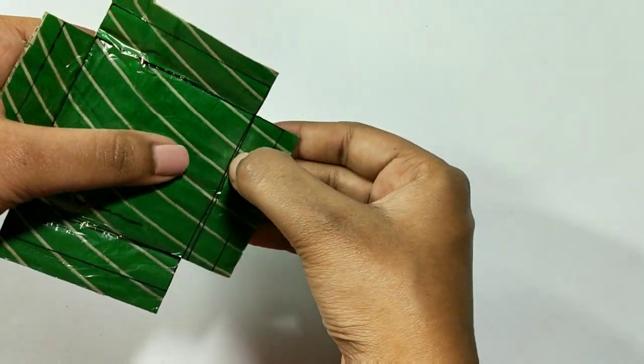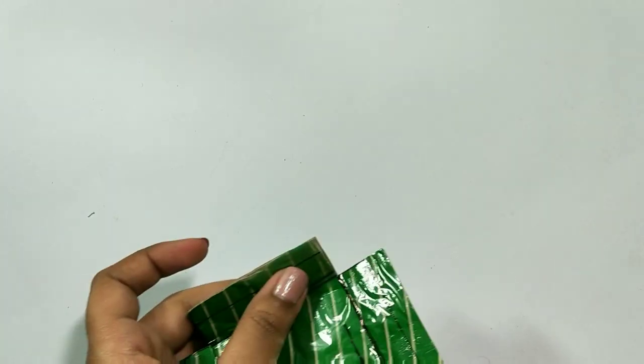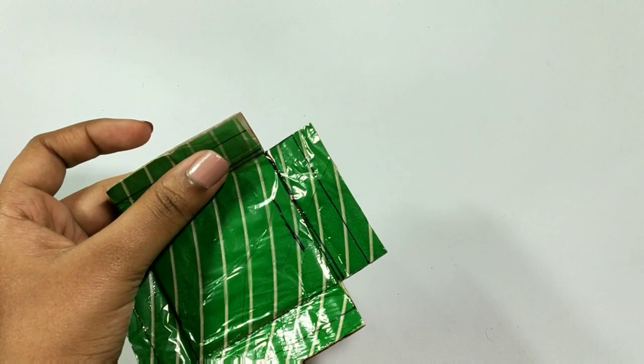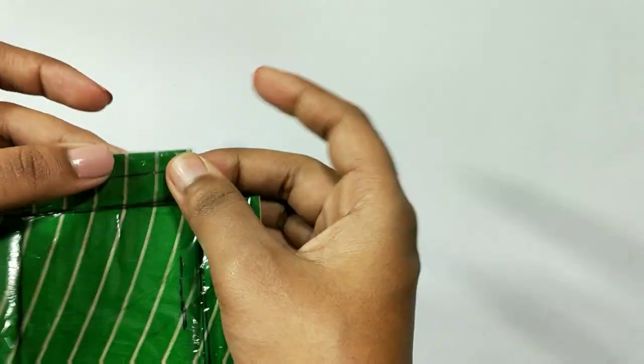Now, just fold it and make it a cubical container. If you see that its lamination is coming out, you can stick it with tape.